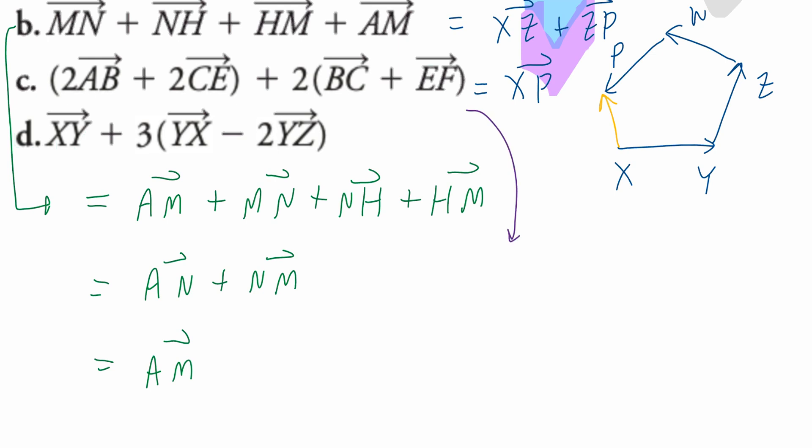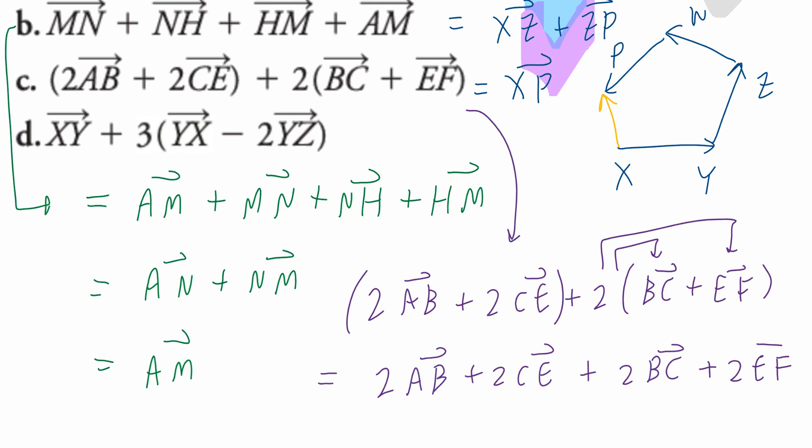Part C, 2 times vector AB plus 2 times vector CE plus 2, open bracket, vector BC plus vector EF, close bracket. And again, I'll copy the brackets like that. Step number one. Take out the brackets. 2 times vector AB plus 2 times vector CE plus 2 times vector BC. Again, I'll draw the arrows here for you. 2 times vector EF.